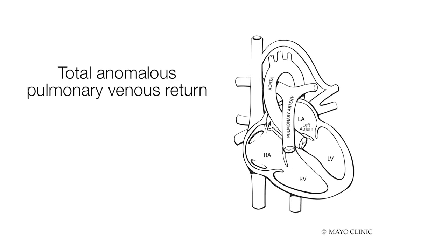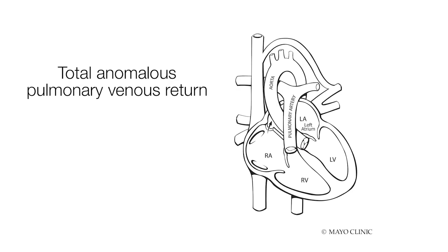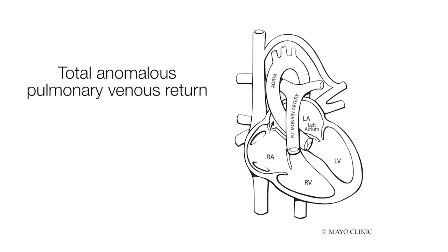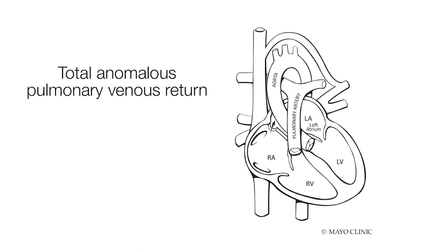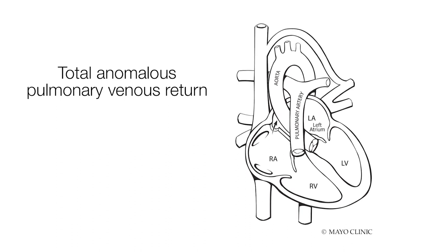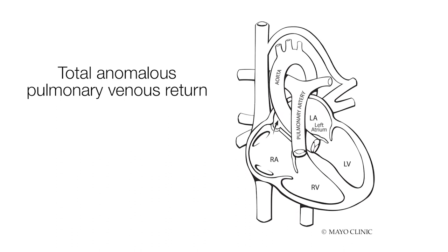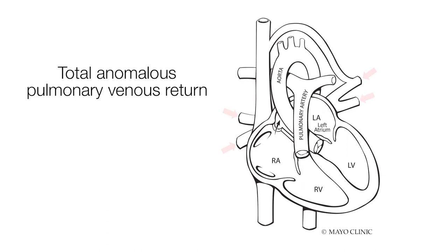Total anomalous pulmonary venous return is when the pulmonary veins do not connect correctly to the left atrium. Rather, these veins collect in a chamber behind the left atrium. Shown in this diagram, the four red arrows on either side show the oxygenated blood coming back from the lungs. You can see they are trying to get back to the left atrium but they are blocked where the red dashed line is.